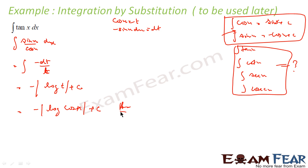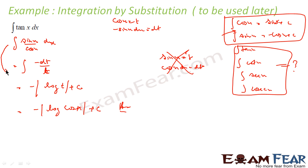Just by observation I knew — if I take sin x as t instead, I get cos x dx as dt. But my integral has sin x dx in the numerator, not cos x dx. So that substitution is a waste. If I take sin x as t, it is not going to help me reduce the equation to a simpler form. But if I take cos x as t, my equation is reduced to a simpler equation, and I get the result.